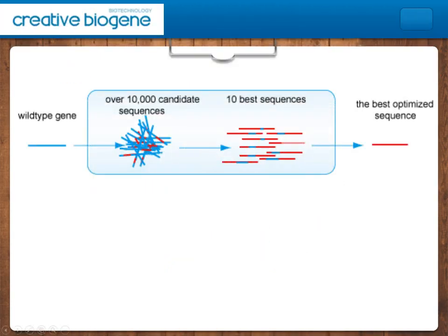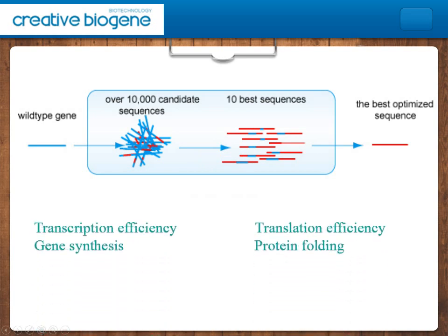Codon optimization is one of the key steps in achieving the high level expression of target genes. There are some key factors for consideration including transcription efficiency, translation efficiency, gene synthesis, and protein folding.